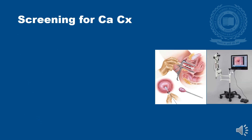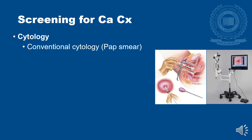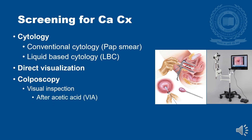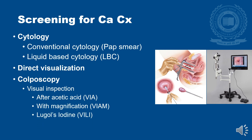Screening for Carcinoma Cervix is done by cytology — conventional cytology like Pap smear or liquid-based cytology (LBC). These can be done by direct visualization of the cervix via speculum examination or colposcopy for a magnified view, by visual inspection after acetic acid with magnification, after application of Lugol's iodine, or by HPV DNA testing, which is a very promising screening test.